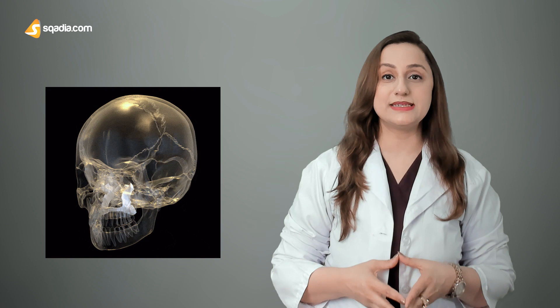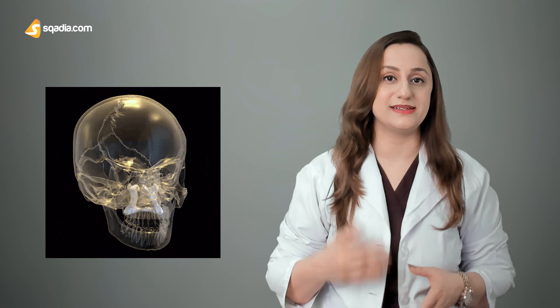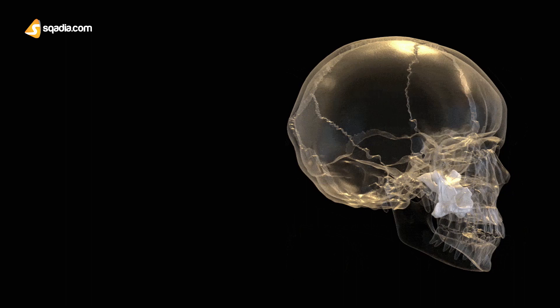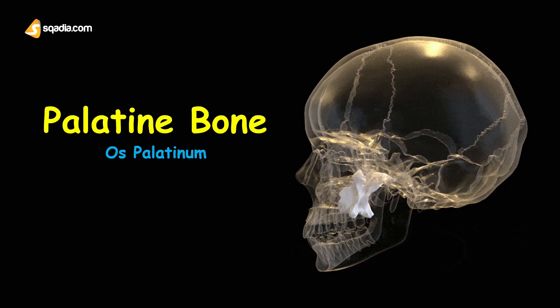Hello everyone, I'm Dr. Hena Khan and today I'm presenting a bone that is present behind the maxilla and is involved in the formation of the hard palate, the nasal cavity and the floor of the orbit. In many animal species, it is located above the uvula in the throat. From the word palate, you must have guessed that we're talking about the palatine bone today. The palatine bone, or in Latin os palatinum, is a paired, flat, irregular facial bone.